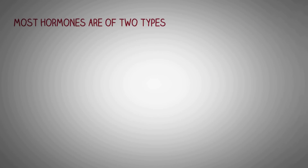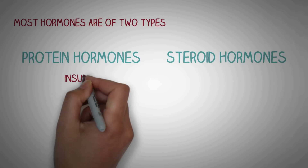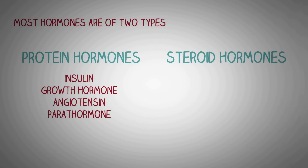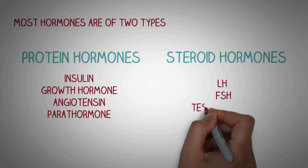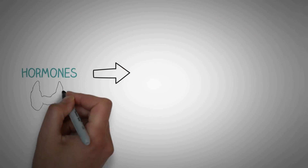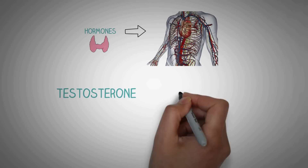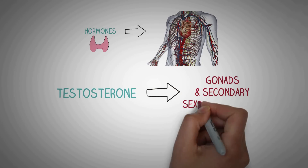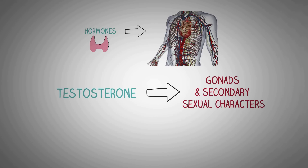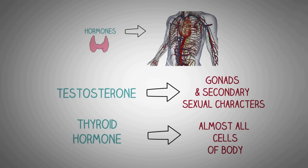Most hormones produced by the human endocrine system are of two types: protein hormones and steroid hormones. While most of them are protein hormones, only a few are of the steroid nature, which include hormones like luteinizing hormone, follicle stimulating hormone, and testosterone. When secreted by a gland, they are carried into the bloodstream and circulated throughout the body. Some hormones affect only a specific part — for example, testosterone, which affects only the gonads and secondary sexual characters — while others like thyroid hormones act on almost every cell of the body to regulate cell metabolism.